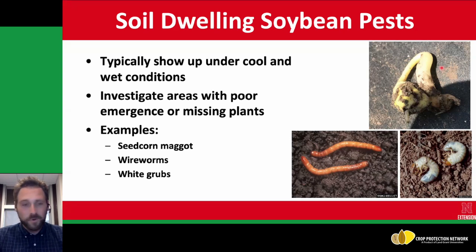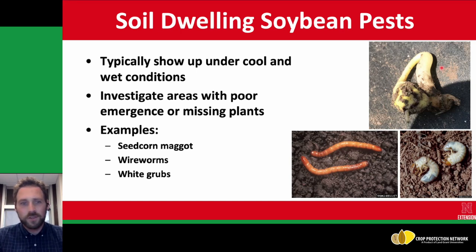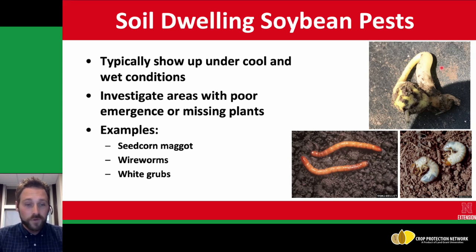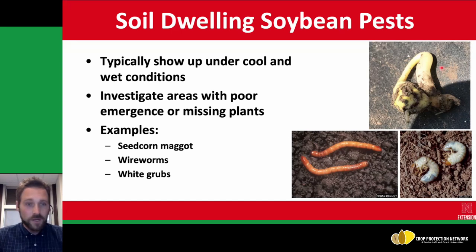The next one is wireworms. Wireworms are a complicated group of a whole bunch of different species. They can range anywhere from a year to up to six years in their lifespan in the soil. They're very patchy in their distribution in the field. This insect likes really cold soil, so it'll be up near the rooting zone of soybeans feeding on those roots. Once the temperature gets up into the 70 degree Fahrenheit area, it will move down in the soil profile quite a bit.